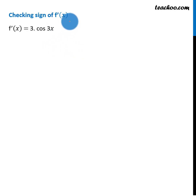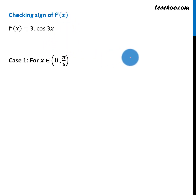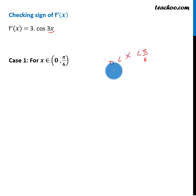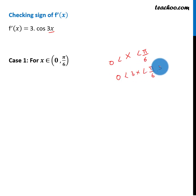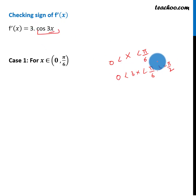Now let's check the sign of f'x on each interval. For the first sub-interval, x is from 0 to pi by 6. Since the angle in our function is 3x, we multiply through by 3, giving 3x from 0 to pi by 2. So our cos(3x) angle ranges from 0 to pi by 2.